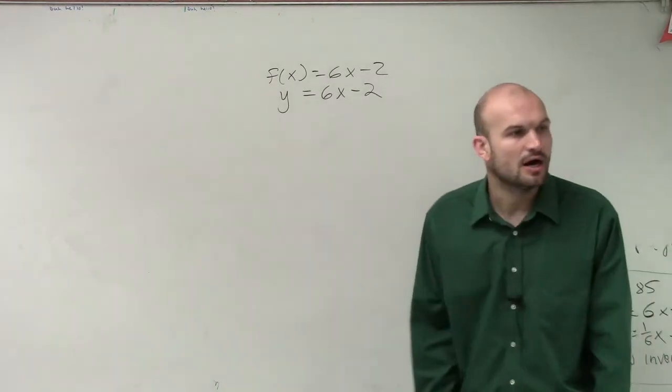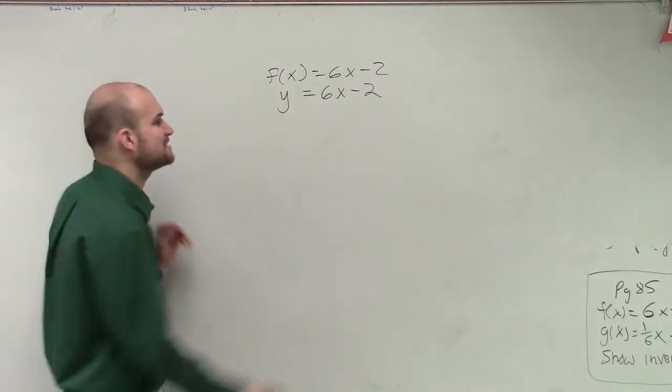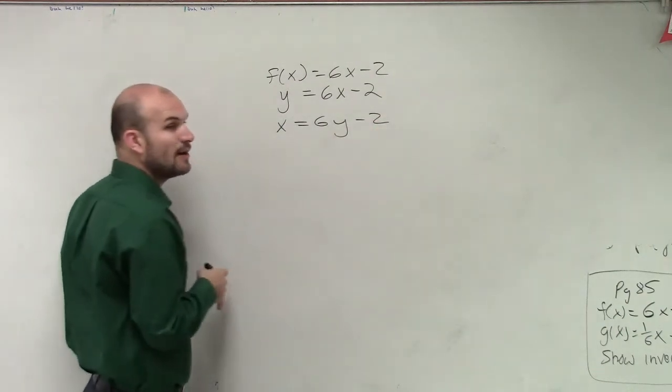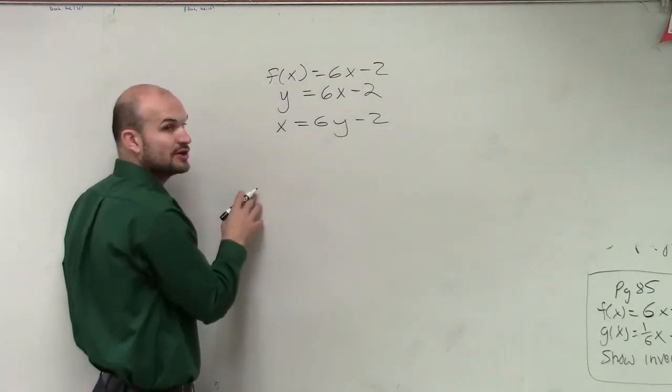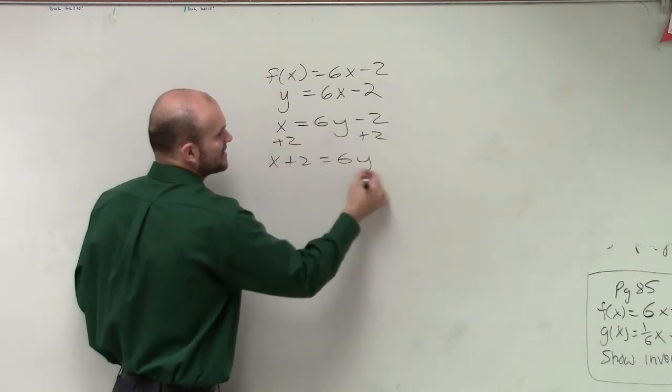Then I swap the x and the y. Now I have to solve for y, so I use my inverse operations by adding 2. I have x + 2 = 6y.